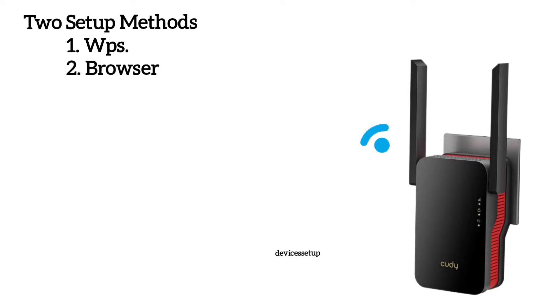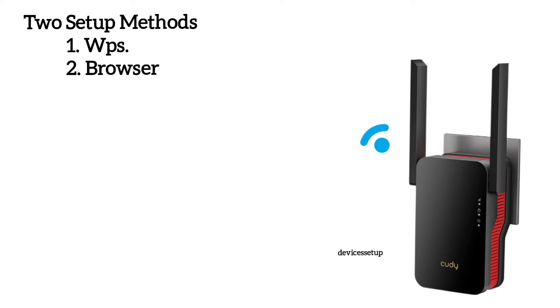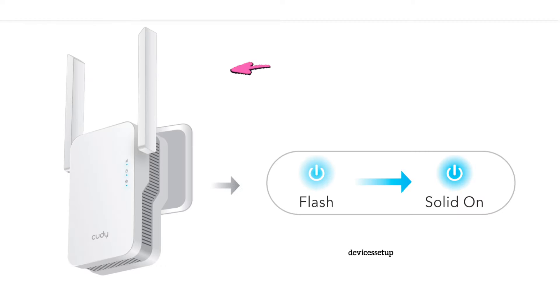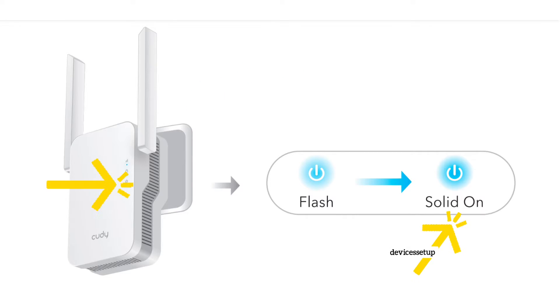There are two ways to set it up: first is via WPS, and second is via browser. To start, make sure your extender is plugged into a power source and has a stable power LED.